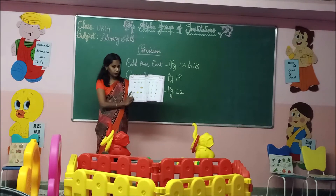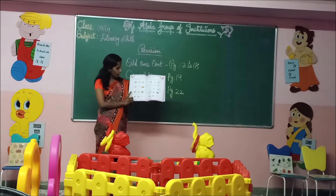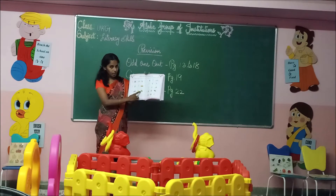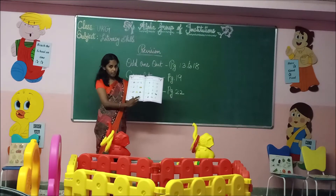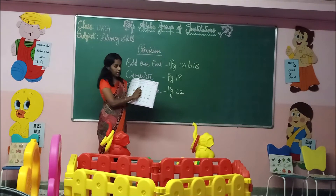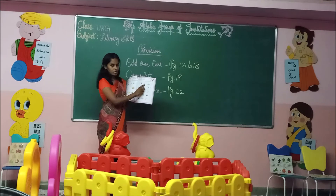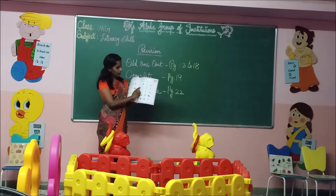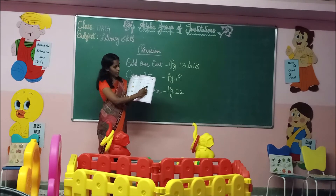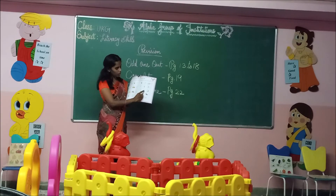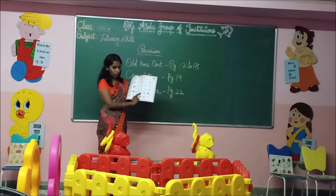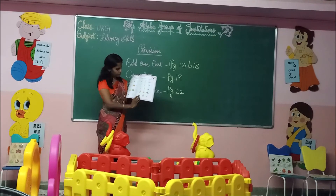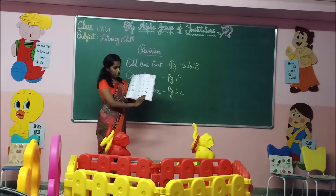H — Hat, Hut. I — Insect, India. J — Jar. K — King, Kind. L — Lot, Lion. M — Mango. N — Nest, Net. One word is related to the letter given, and you must circle only those.